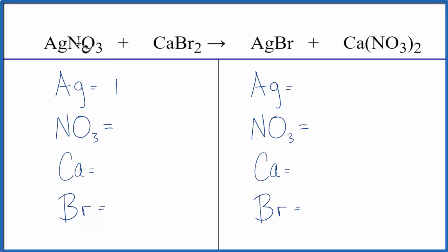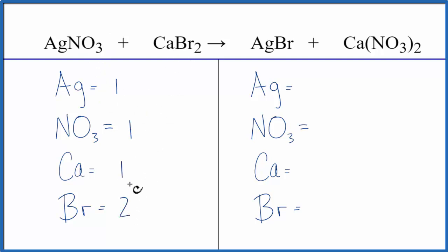it stays together. We have it on this side and on the products side. Since we have it on both sides, we can just call it one item, and we have one of them. One calcium, two bromines. On the product side, we have one silver, two of these nitrates — these NO3s — one calcium, and then one bromine.